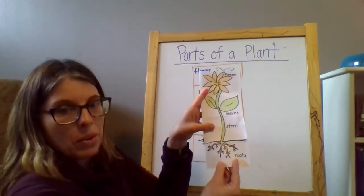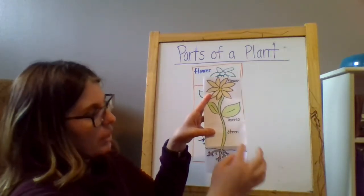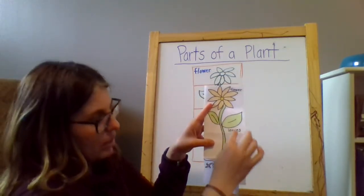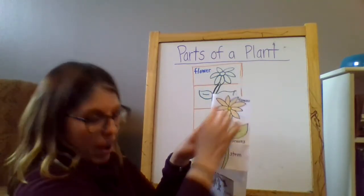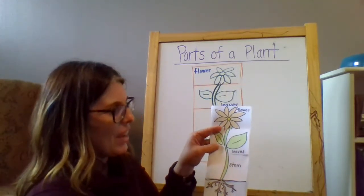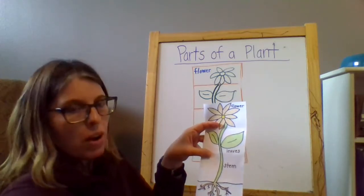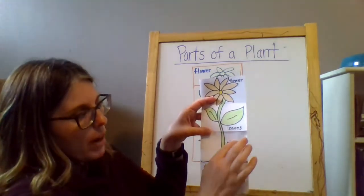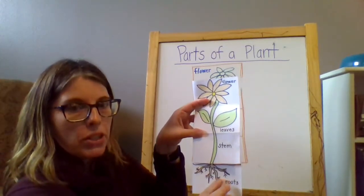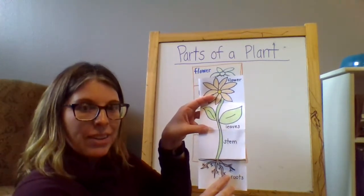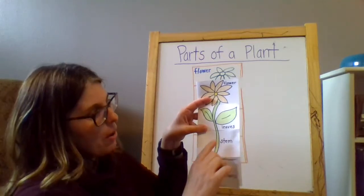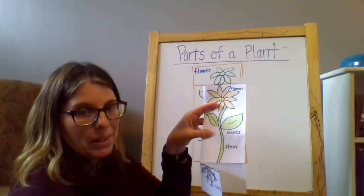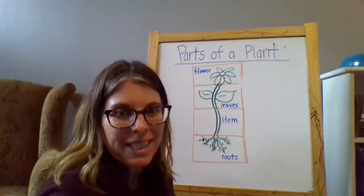So remember there's the four parts that we're focusing on. Let's say them together. Roots. Stem. Leaves. Flower. I think you've got this. Take your time and draw a really careful flower and do careful writing for these parts. You'll see there's a picture of this in the newsletter and you can use that to look at to help you as you create your flapbook. Have fun botanists.